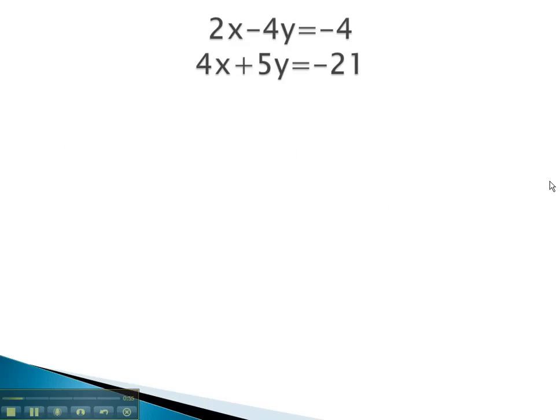For example, if I had a problem like this one, we may notice that we can quickly multiply the 2 by something to get the opposite of 4. We can multiply the 2 by negative 2. That'll give us negative 4 in the first equation, and positive 4 in the second equation.